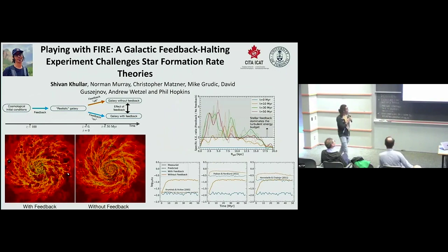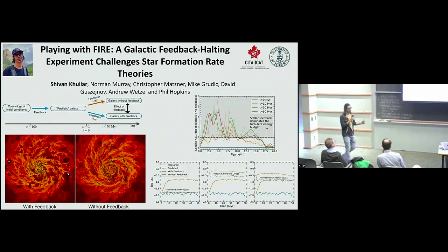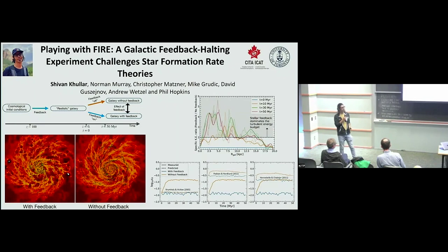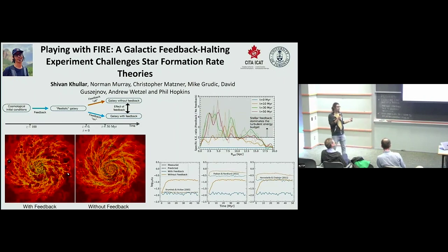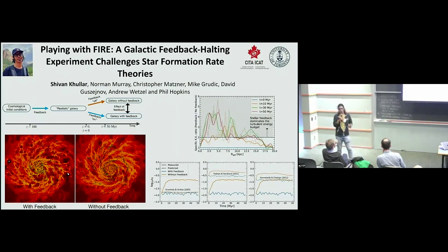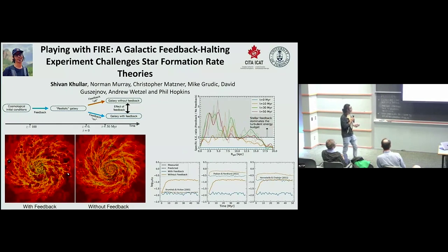Hello, I'm Shivan — a graduate student at CITA, University of Toronto. My poster will be on arXiv soon. We perform controlled numerical experiments of a realistic galaxy to isolate the effects of stellar feedback on galactic dynamics. We create two branches in the galaxy's evolution: one with stellar feedback on and one with it off. We also identify and track GMCs to study their star formation properties. We find that stellar feedback is the dominant driver of turbulence at 0.5 kiloparsec scales within about 10 kiloparsecs of the galactic center.